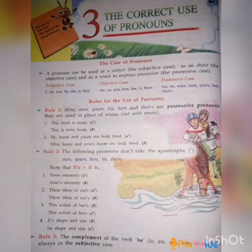Rule 2: The following pronouns don't take an apostrophe — yours, ours, hers, its, theirs. Writing 'our's' with an apostrophe is wrong. The correct spelling is O-U-R-S. Note that 'it's' means 'it is.'